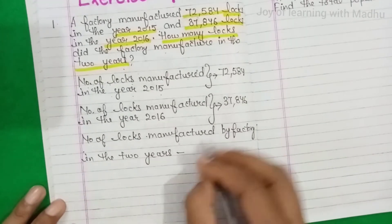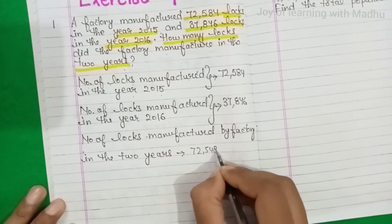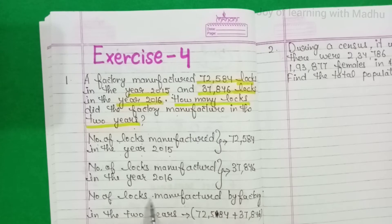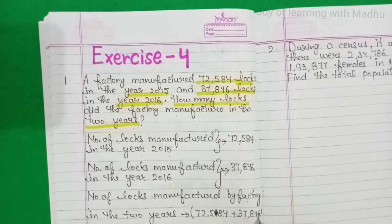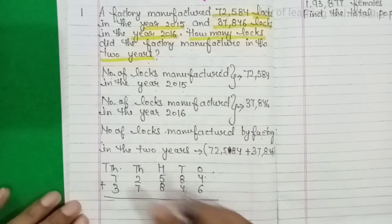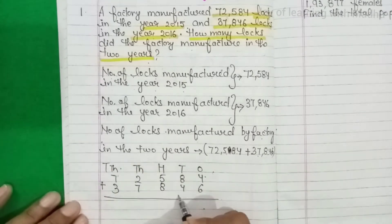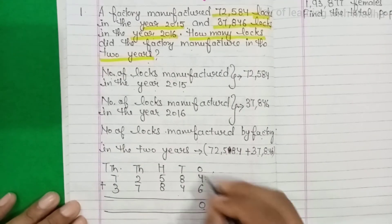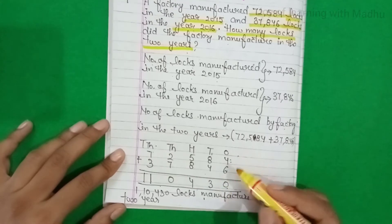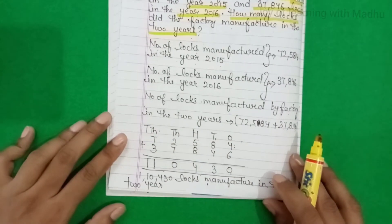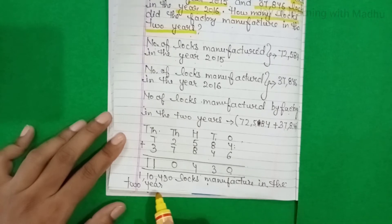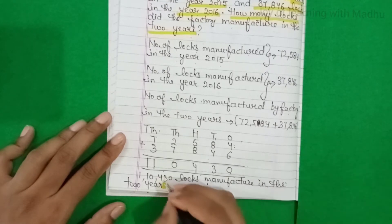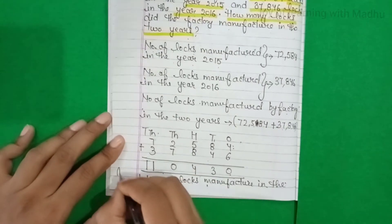72,584 plus 37,846 — इसे addition form में place values के साथ लिखेंगे। दोनों values लिखी हैं, then we add — carry over करते हुए। And the answer is 1,10,430 locks manufactured in the 2 years.